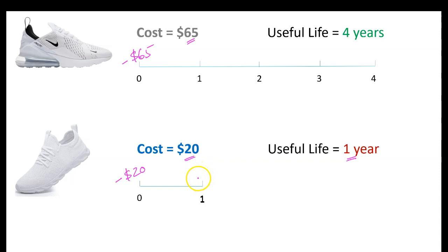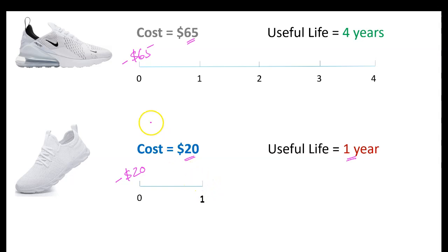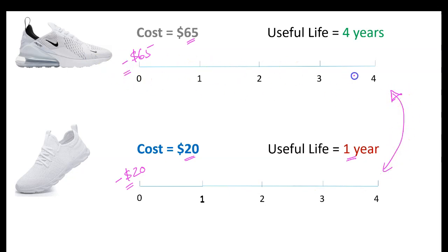If you were only looking to spend money on a running shoe once — if you were not a regular runner — then it probably makes sense to just buy the generic brand because it costs less and after one year you're not in the market for another shoe. But you are a regular runner, which means after one year you're going to want to replace the shoe. So it doesn't make sense to simply compare negative $65 with negative $20. What you should be doing is asking: if I buy the generic brand, how much am I looking to spend over the next four years? Then you are doing an apples-to-apples comparison.